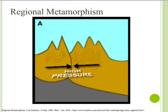Here's an example of regional metamorphism. This is a cross-section, so if we cut the earth in half, we would have two tectonic plates. As they push together, the rocks, because they're under high amounts of pressure, will start to bend and fold. This would be your regional metamorphism.